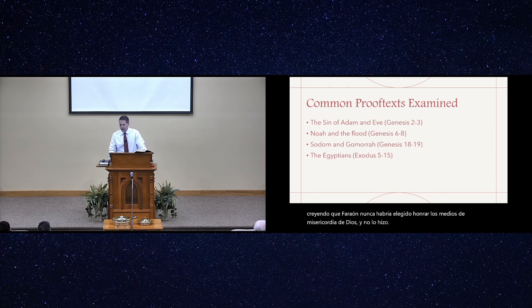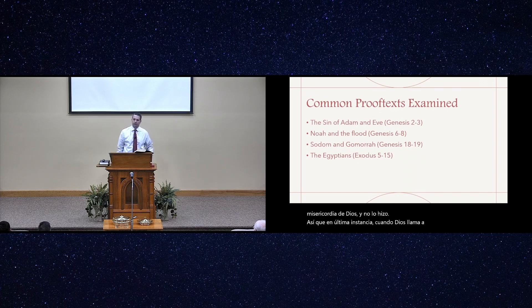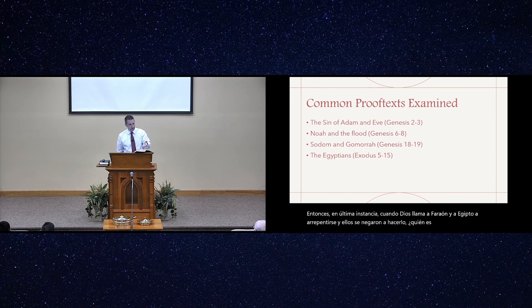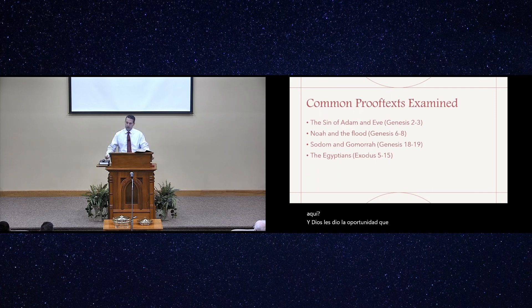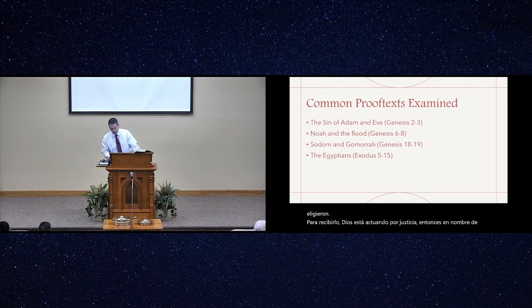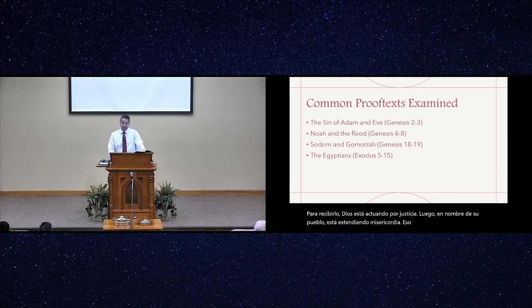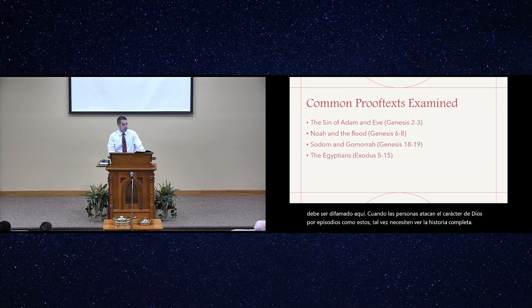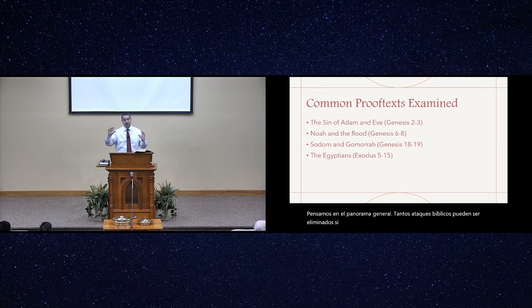When God calls Pharaoh and Egypt to repent and they refuse to do so, who is truly to blame? God gave them opportunity. He extended mercy. But they chose not to receive it. God is acting out of justice on behalf of his people. He is extending mercy that is being refused. His character is not to be maligned here. Maybe they need to see the full story. We need to think about the bigger picture. So many Bible attacks can be disposed of if we'll just study and think about context.